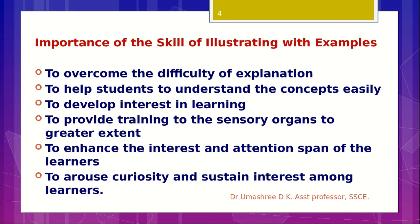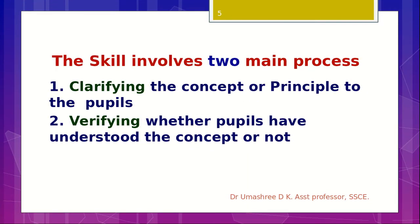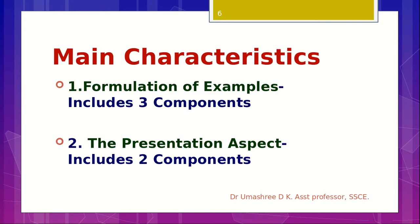In order to use this skill in our teaching-learning process as a teacher, we need to understand what the different processes involved in this skill are. The skill of illustrating with examples involves two main processes: clarifying the concept, principle, generalization, or rule to the pupils, and verifying whether pupils have really learned the content which was taught. These are the two main processes — clarifying the concept being taught and providing an opportunity for learners to verify the content they have learned.